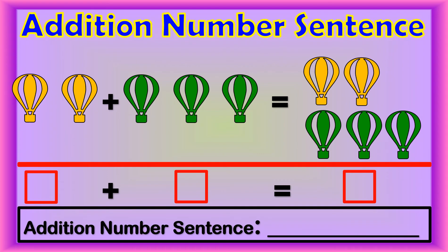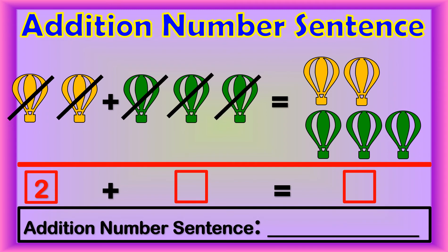Let's write an addition number sentence for this example. First, count the yellow balloons. One, two. Two yellow balloons. Now the green balloons. One, two, three. Three green balloons.